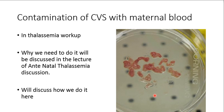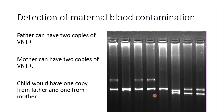More details about how it affects analysis in thalassemia workup will be discussed in a subsequent lecture. Today I'll discuss how VNTRs can help us identify whether maternal blood contamination has occurred in chorionic villi sample DNA. Similarly to paternity testing, we extract DNA from the father, the mother, and the chorionic villi. The father may have one or two copies, the mother similarly, and the child would inherit VNTRs from both parents.